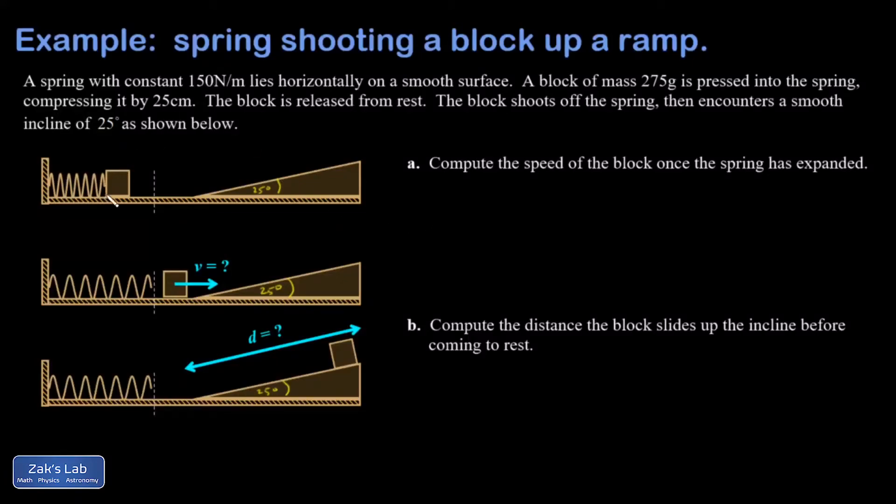On this problem, we have a coiled spring used to shoot a block across a smooth surface, which is code for frictionless. And I have a mass on this thing. There's a lot of stuff hidden in this paragraph, so I'm going to get it out of there.